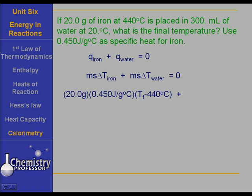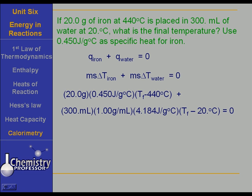That takes care of the heat for iron. The heat for water is the 300 milliliters — the density of water is about 1 gram per milliliter, so that rounds off to 300 grams — times 4.184 joules per gram degrees Celsius, and the temperature change is the final temperature minus the initial temperature: T_f minus 20 degrees Celsius. Those two together must equal zero. Go through your algebra carefully, and you will find that T_f is 23 degrees Celsius.